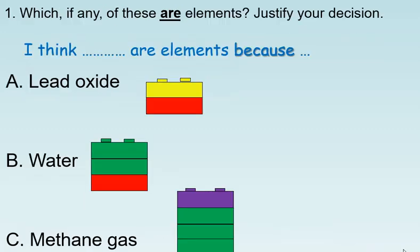Question one: which, if any, of these are elements? Justify your decision. We have lead oxide—I see a yellow brick joined to a red one. We have water, where I see two greens joined to a red, and methane gas, where it's a purple joined to four greens. So which out of these, if any, do you think are elements? Don't forget to explain why.